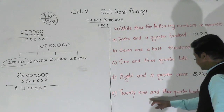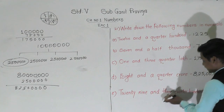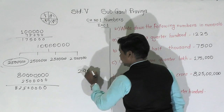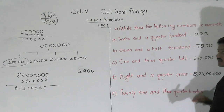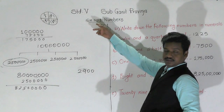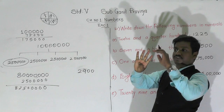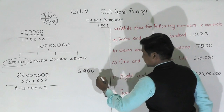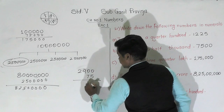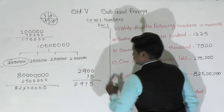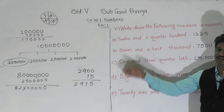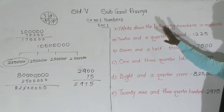Last: '29 and 3 quarter hundred.' This means 2,900 and 3 quarter of 100. Three quarters of 100: three times 25 equals 75. So 2,900 plus 75 equals 2,975. This is how we solve number names given in this fraction form.